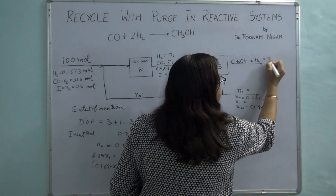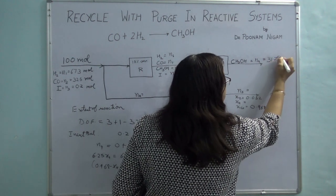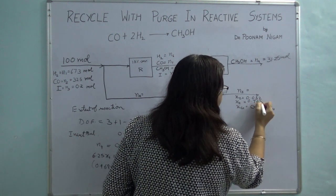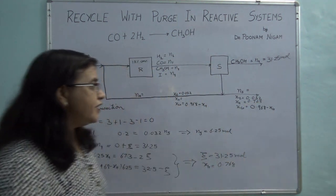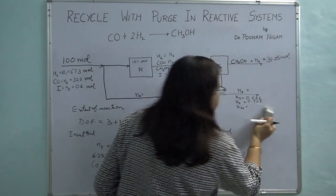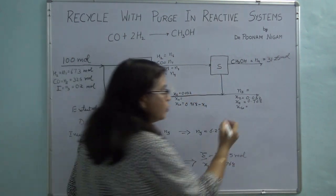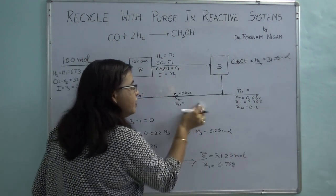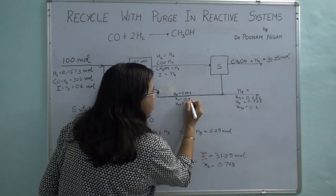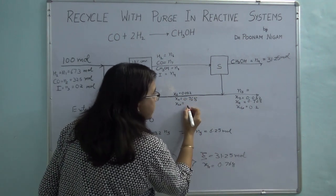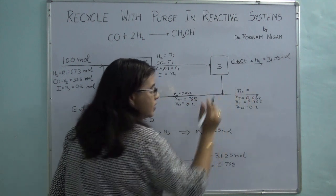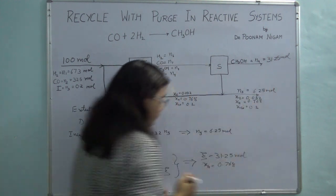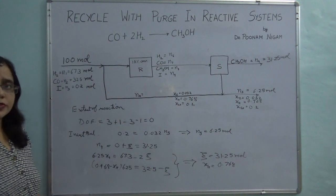From 1 − 0.032 − 0.768, the mole fraction of carbon monoxide is 0.2. We update the flowchart accordingly. Now we know the mole fractions of the purge and recycle streams, and the purge flow rate N5 = 6.25 moles. One part of the problem is done.